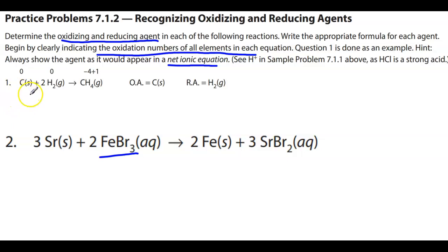Okay, so the first one we can see, carbon is going from zero to negative four, which means it's being reduced. So because it's being reduced, it is the oxidizing agent. Hydrogen is going from zero to positive one, it is losing electrons, which means that it is the reducing agent. It is being oxidized.